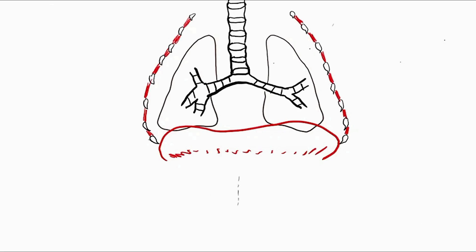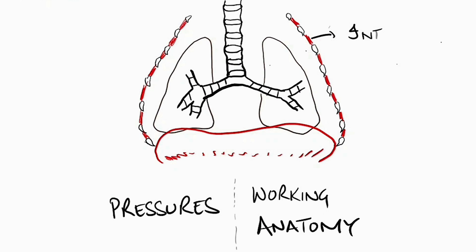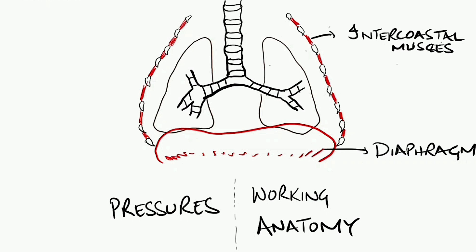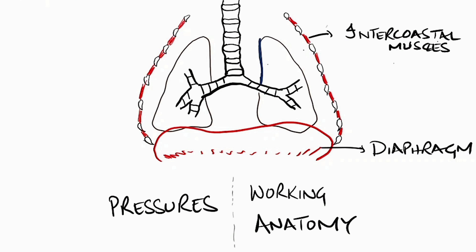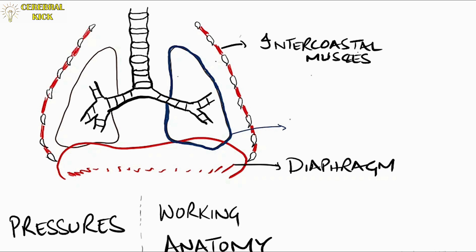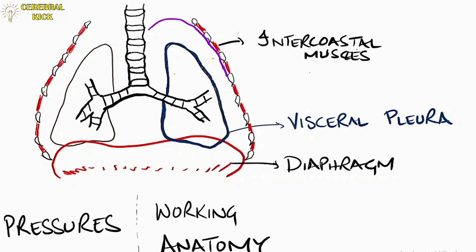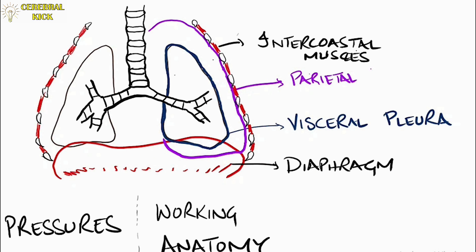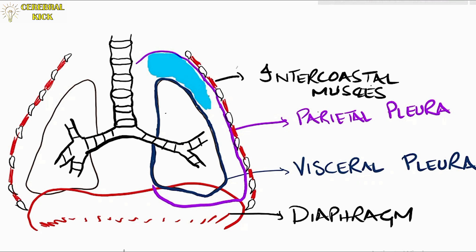Let's draw the lungs in the end-expiratory phase and see the working anatomy. We've already covered how intercostal muscles and diaphragm play a part in spontaneous ventilation. To understand the working of lungs, you need to know about the pleura. There is a visceral pleura closely linked to the lungs, drawn here in navy blue, and the parietal pleura close to the chest wall is shown in purple. The space between these two pleura is the pleural cavity, marked in sky blue.